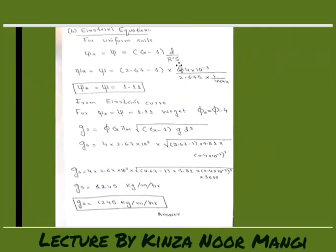And this R value we have already calculated previously in the formula from the relationship. S we know and D the grain diameter, G is specific gravity. From here we have got the psi value is 1... somewhere here will be 1.